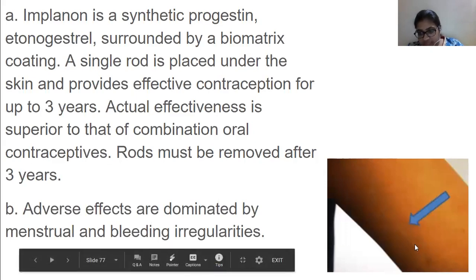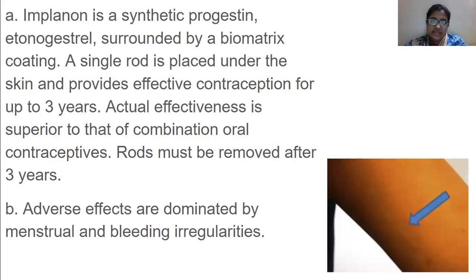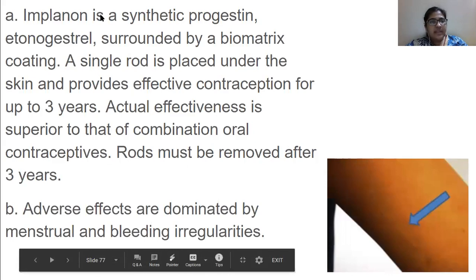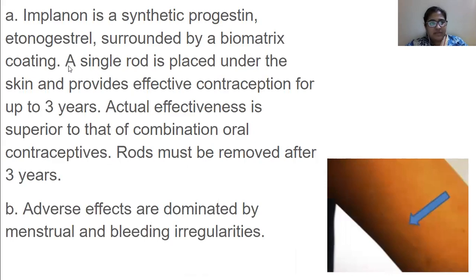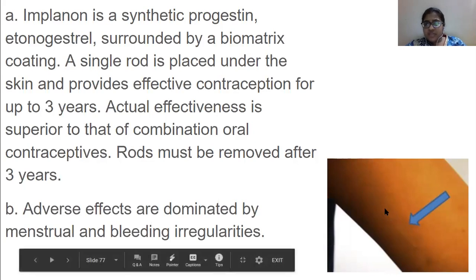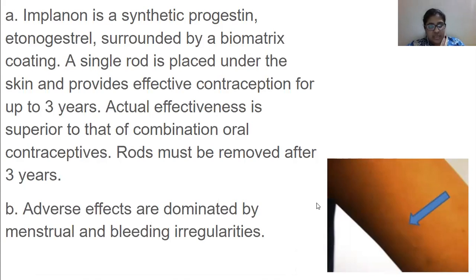For subcutaneous progestin implants, a synthetic progesterone surrounded by a biomaterial coating is used. A single rod is inserted under the skin at a 30-degree angle and provides effective contraception for up to three years. Actual effectiveness is superior to that of combination oral contraceptives. Rods must be removed after three years; otherwise inflammation or allergic reactions can occur. Adverse effects are dominated by menstruation and bleeding irregularities.